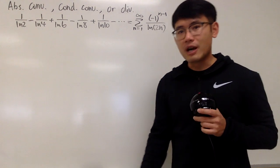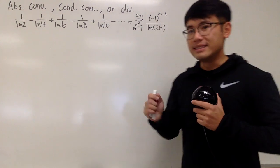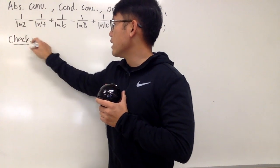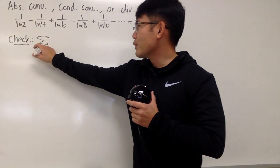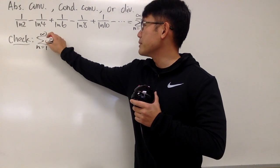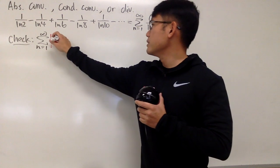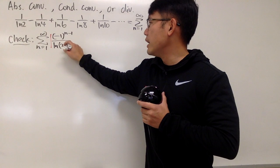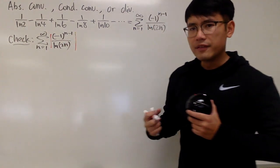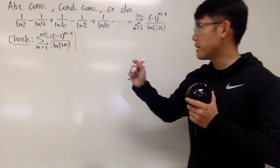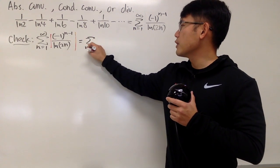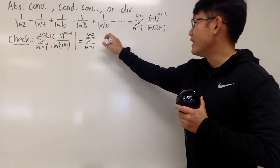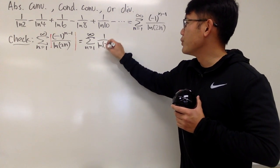Now check for absolute convergence — we just apply the absolute value and see what happens. We look at the sum as n goes from 1 to infinity of the absolute value of negative 1 to the n-1 over natural log of 2n. Since absolute value makes everything positive, this becomes the sum of 1 over natural log of 2n.